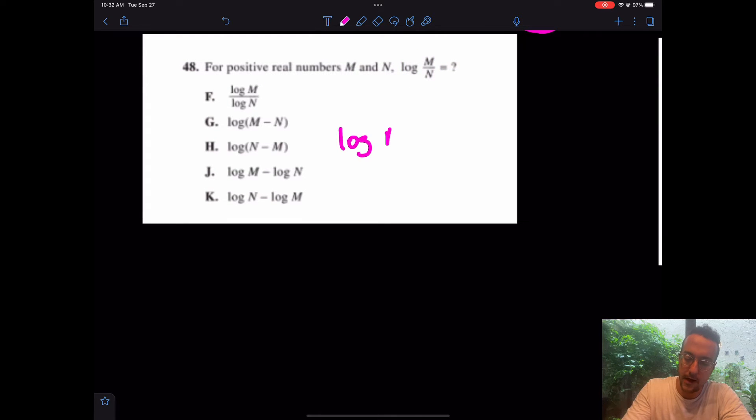So which answer choice do we like for 48? Well, for 48, I have log of m minus log of n. That's how they got those fractions like that. Again, subtraction is division. I really like answer choice J. Done. That took seconds.